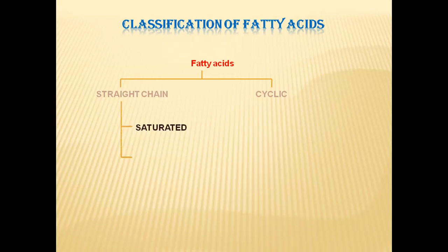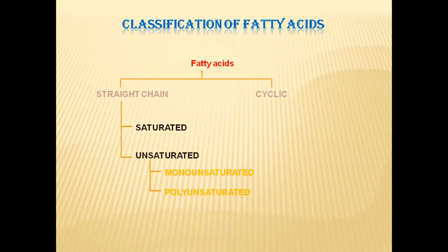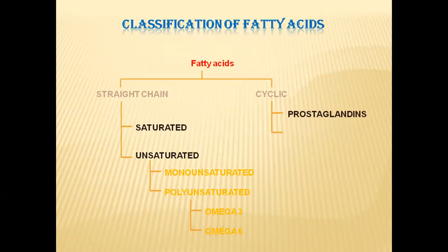In straight-chain fatty acids, we have saturated fatty acids and another group is unsaturated fatty acids. In unsaturated fatty acids, we have monounsaturated fatty acids and another group is polyunsaturated fatty acids. In polyunsaturated fatty acids, we have omega-3 fatty acids and omega-6 fatty acids. In cyclic fatty acids, prostaglandins and thromboxanes are two subcategories.